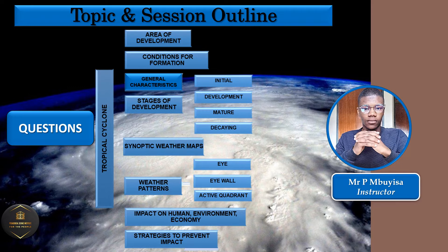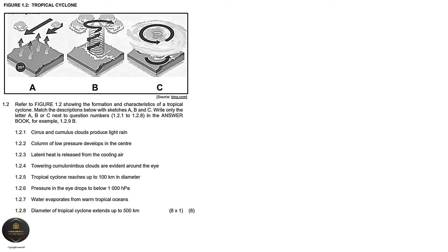Without wasting time, let's get straight to the questions. The first question is a multiple choice question sourced from the Department of Education past papers. You've been given Figure 1.2 which is on tropical cyclones, showing diagrams A, B, and C.